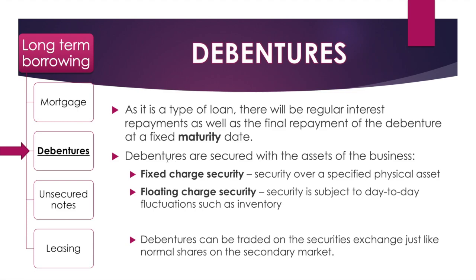Debentures are secured with the assets of the business in two ways. A fixed charge security is when a specific physical asset is identified as security if the business can't repay the loan. A floating charge security is when security is subject to day-to-day fluctuations and operations, such as inventory. Debentures can be traded on the securities exchange like shares on the secondary market, but when traded that way, there is no change to how much money the issuing business receives.